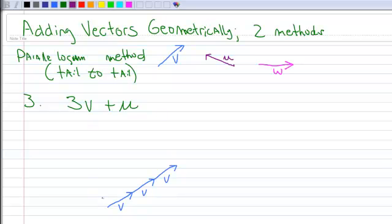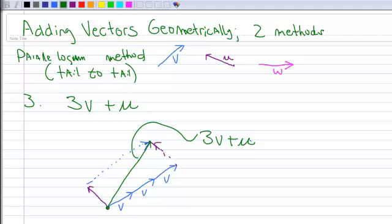Then you create your parallelogram. So there's my other U. And then I've got a dotted line to create my parallelogram. And then I'm going to draw the results. So I'll start where the two tails are together, up to where the two tips go. And that piece right there is three V plus U. And that's adding vectors geometrically.